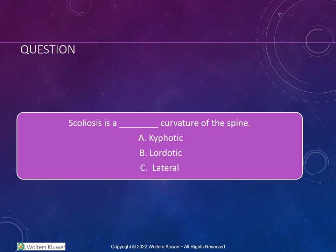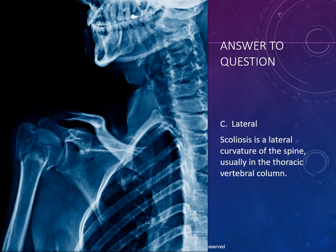This question asks: scoliosis is what type of curvature of the spine? A, kyphotic; B, lordotic; C, lateral. The answer is C, lateral. Scoliosis is a lateral curvature of the spine, usually in the thoracic vertebral column.